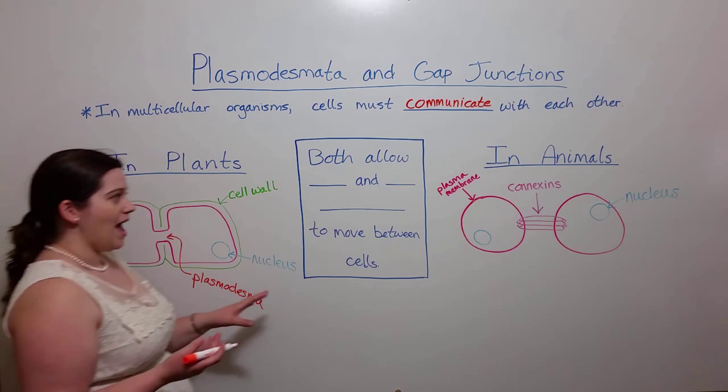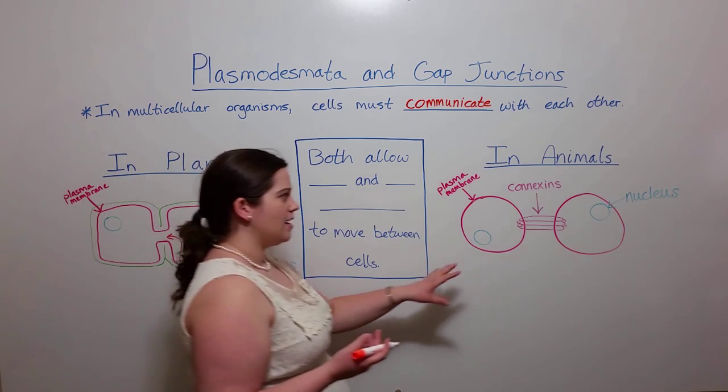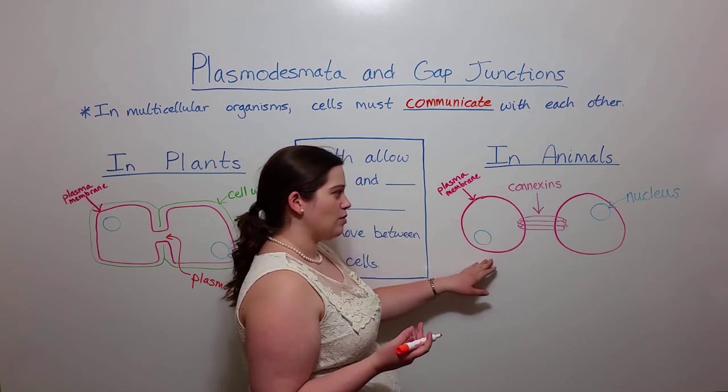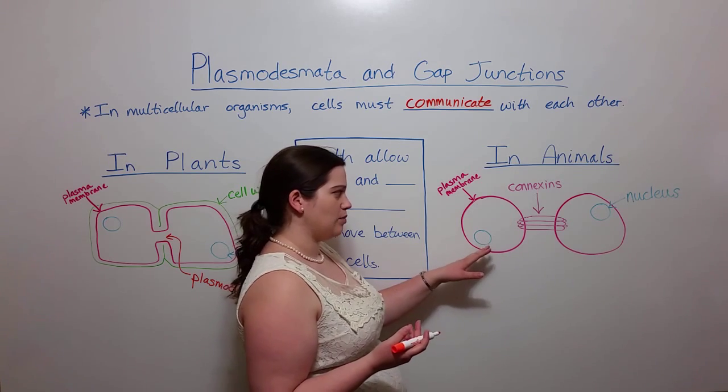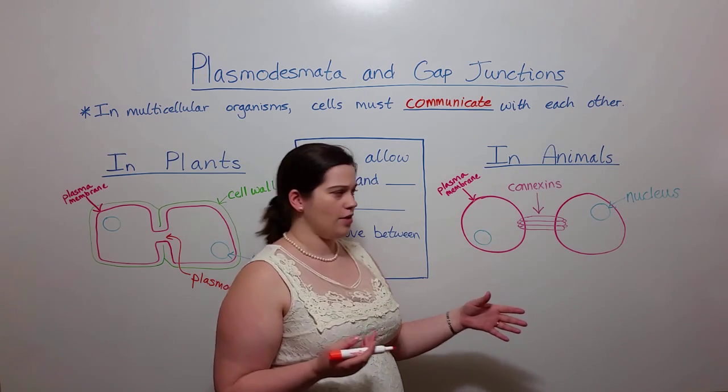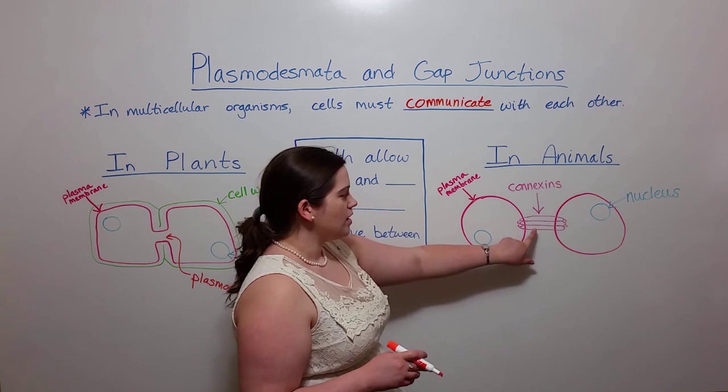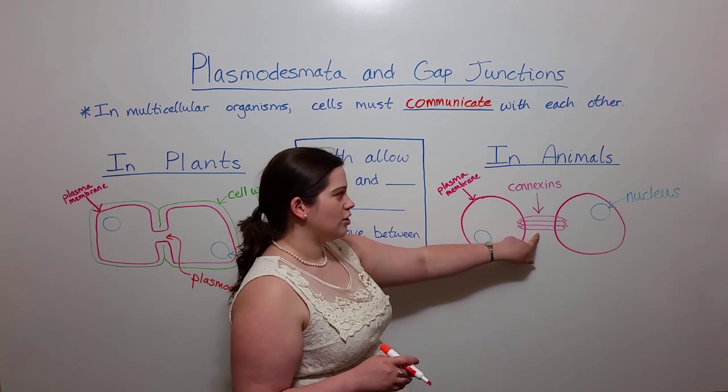Now let's look at gap junctions. Here we have two animal cells, the plasma membrane in red, the nucleus in blue. Again, I've left out several other organelles. But notice what is connecting the two cells.